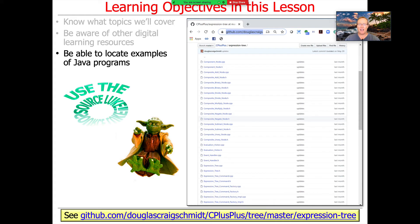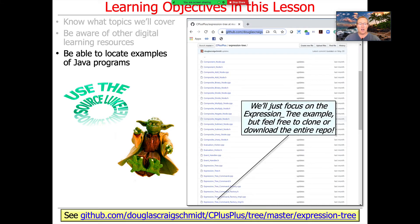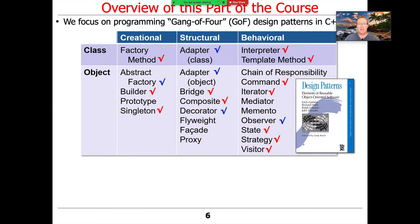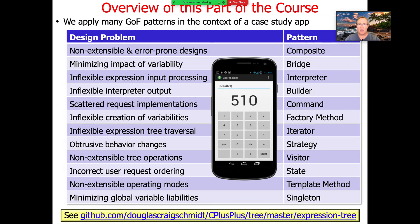I'll show you where you can find the examples of our programs. These are actually C++ programs, not Java programs, though I have a Java version as well. We're going to be focusing on the Gang of Four design patterns from the book 'Design Patterns: Elements of Reusable Object-Oriented Software,' which you should have — it's a great book. We'll be applying these patterns in the context of the expression tree case study.